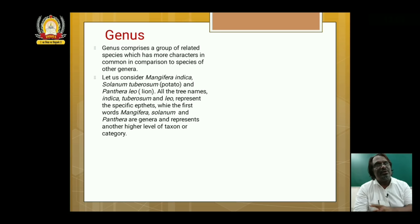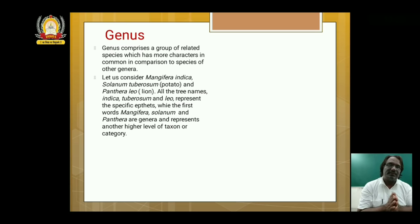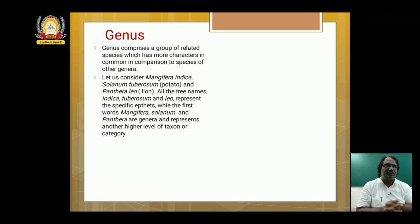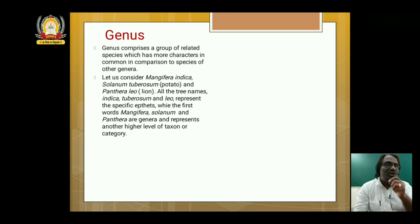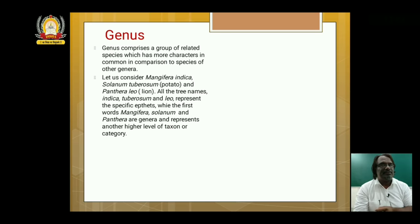A mango tree, a potato plant, and a lion — which are totally different from each other, different species. Look at the names: Mangifera indica, Solanum tuberosum, Panthera leo. The second word in these names — indica, tuberosum, leo — represents the specific epithet, showing that they are different species. Whereas the first word — Mangifera, Solanum, Panthera — indicates the genus. At the higher level, when you consider the genus, I told you related species come there.